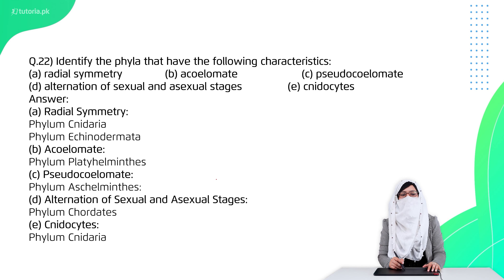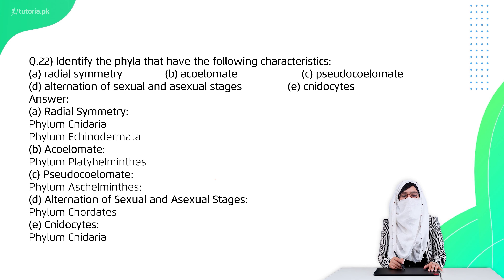Question 22 is: identify the phylum for each characteristic. Radial symmetry: phylum Cnidaria and Echinodermata. Acoelomates: phylum Platyhelminthes. Pseudocoelomates: Nematoda. Alternate sexual and asexual stages: phylum Cnidaria (chordates mentioned). Nematocysts: phylum Cnidaria.